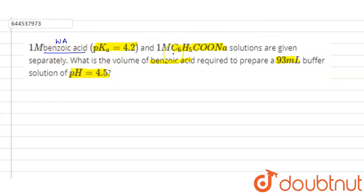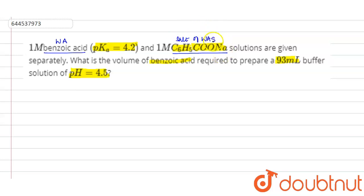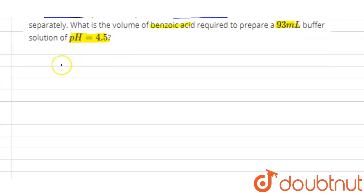Benzoic acid is a weak organic acid, and C₆H₅COONa is the salt of benzoic acid — specifically a salt of a weak acid and a strong base.